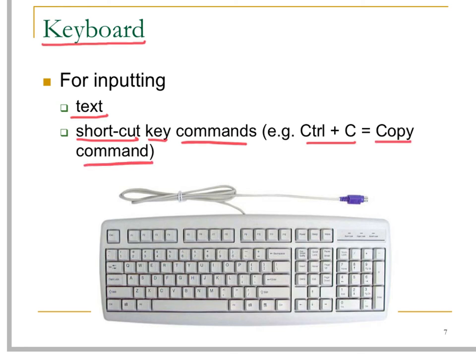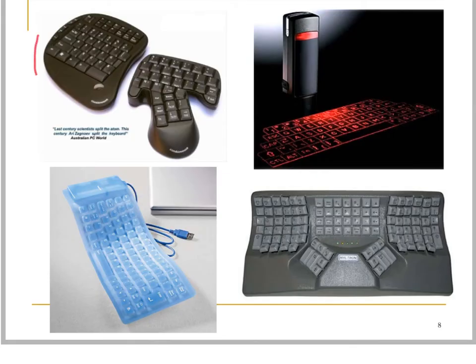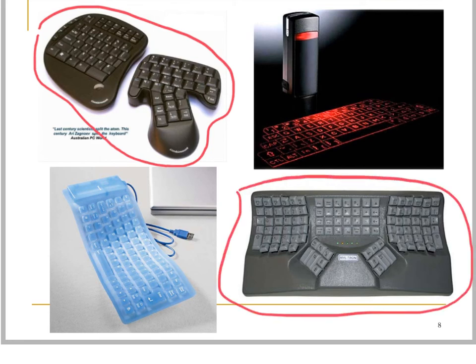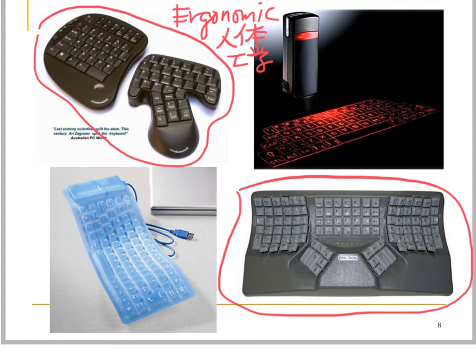We now come to various specially designed keyboards. The ones on the top left corner and the lower right corner are called ergonomic keyboards (人体工学). These keyboards are specifically designed to suit the special needs of different people, making typing much easier. They are especially suitable for people with physical disabilities or people with limited arm movement.